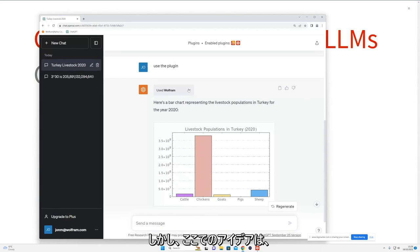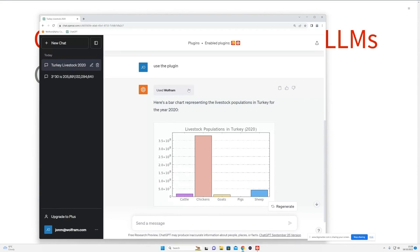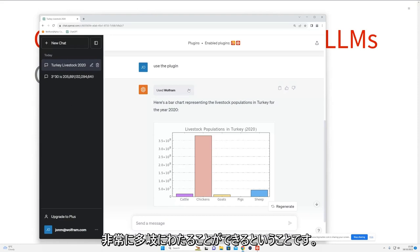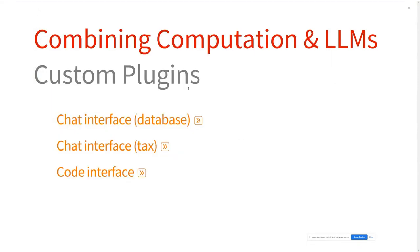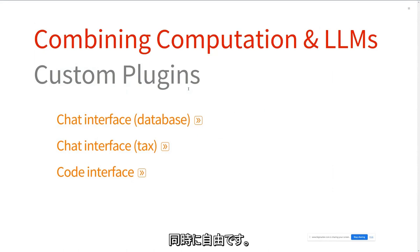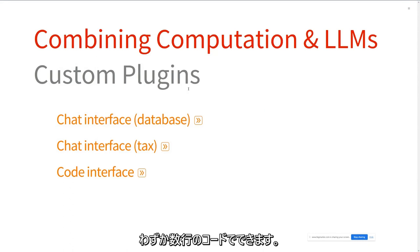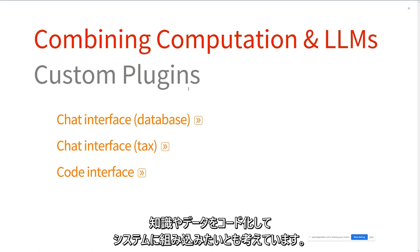The idea here is that you now have very open-ended kinds of things you could do — if you can describe it within code. Those are very general and open-ended. Wolfram Language can do lots of things in only a few lines of code.